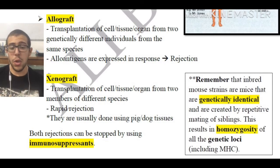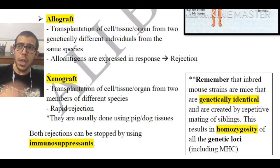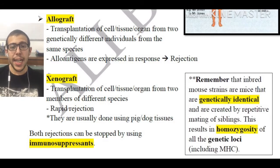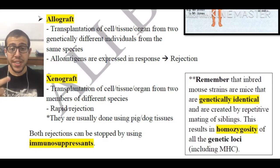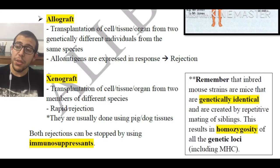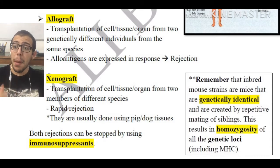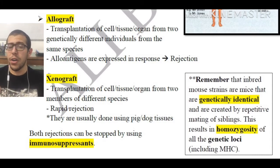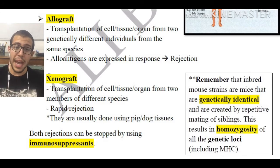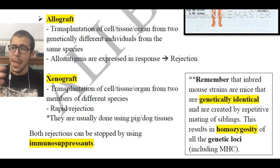Xenografts are one of the more common things that occur in modern science at the moment. Xenografts involve the transplantation of the cell, tissue, or organ from two members of different species. Here we're going to see a rapid rejection — after 10 days if it is the first exposure, or three days after the second exposure.